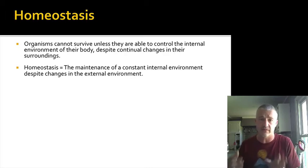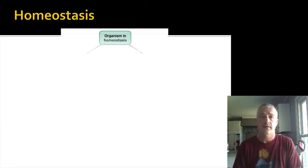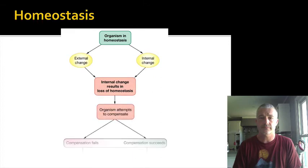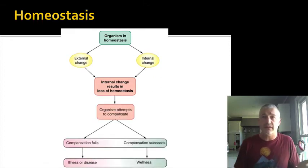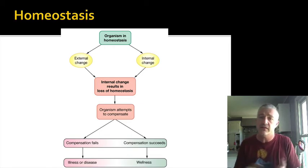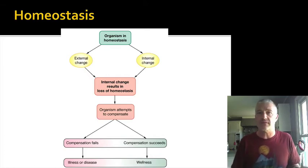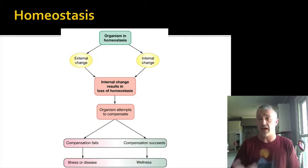Homeostasis is the maintenance of a constant or stable internal environment despite a changing external environment, and it's a key idea throughout this course. When an internal or external change leads to some loss of homeostasis — going out of that particular set range — the body is going to try to compensate. Really, one of two things can happen.